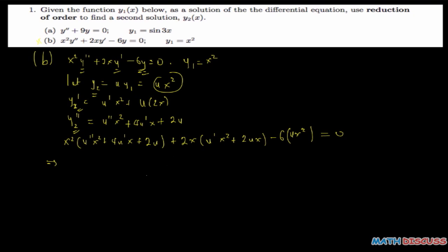On simplifying — multiplying through and collecting terms — we obtain u double prime x to the power 4 plus 6u prime x cubed equals 0. After substitution, you should always arrive at an equation of this format. If not, you have likely made a mistake somewhere.